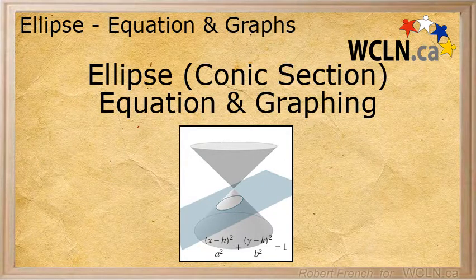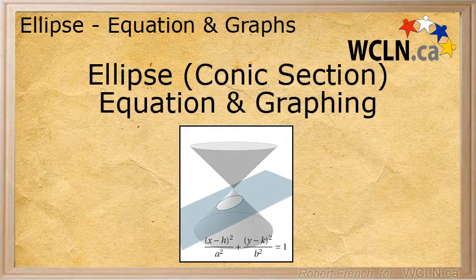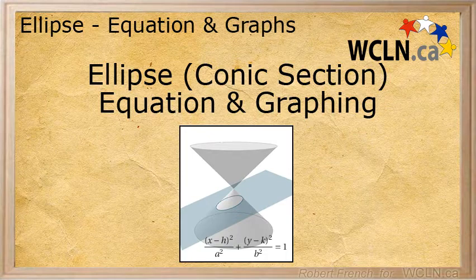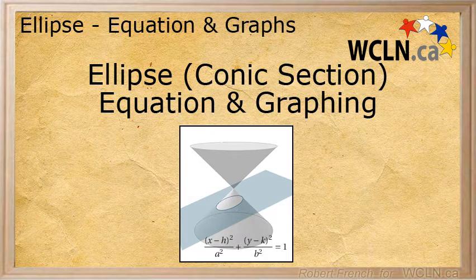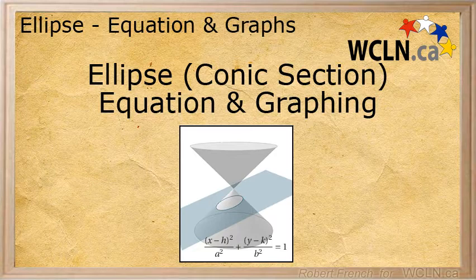In this tutorial, we will be looking at the equation and graph of the conic section created by a plane at an angle to the axis of the cone, also known as an ellipse.